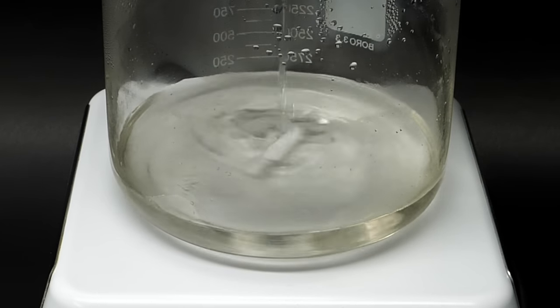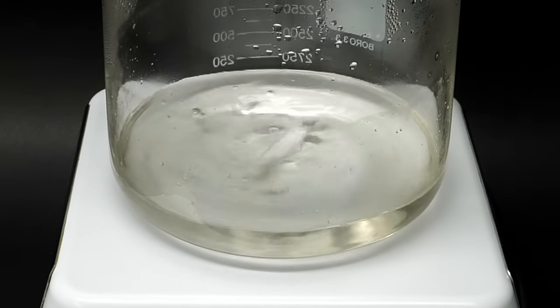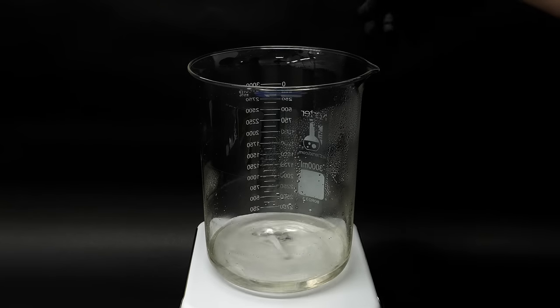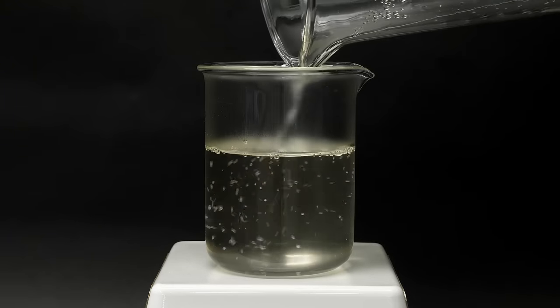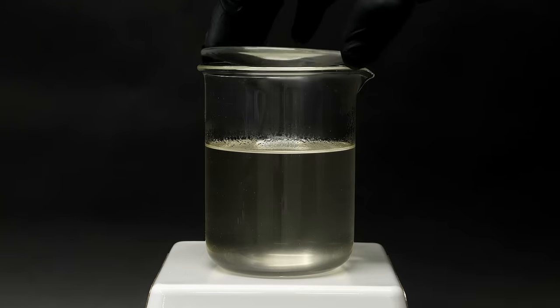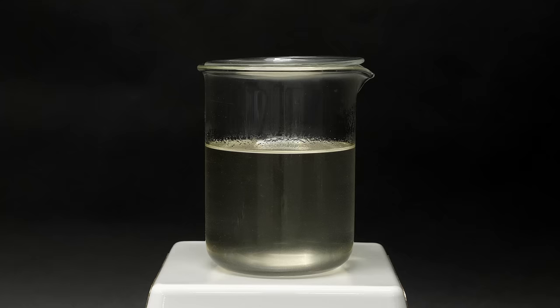So now, all I have to do is add a small amount of vinegar, and I can finally take it off the hot plate. Then, what I have to do next is just pour it all into a smaller beaker, loosely cover the top, and wait for it to cool down.